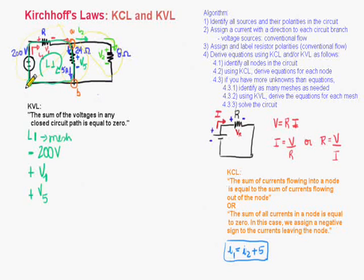And I have now all the voltages in this loop. The value of a voltage source and the voltage drop across two resistors. Now what I need to do is just to sum the values of all those voltages. So I will have negative 200, let me put it between parentheses, plus V1, plus positive V5, that should be equal to 0.